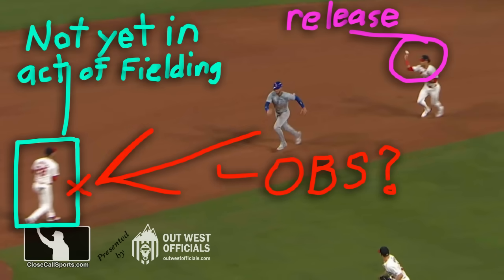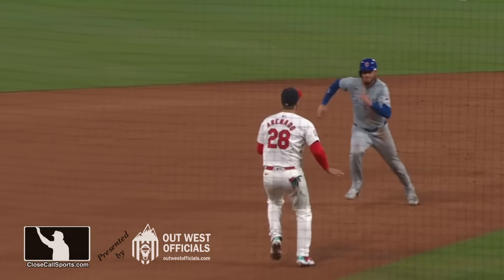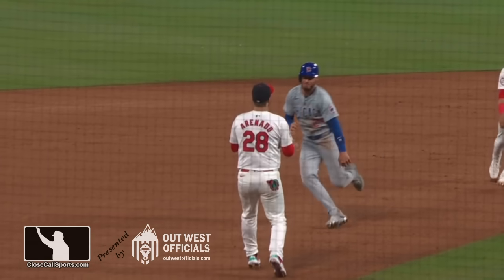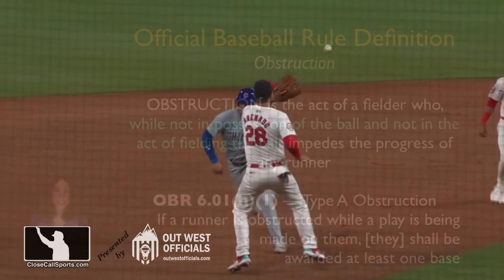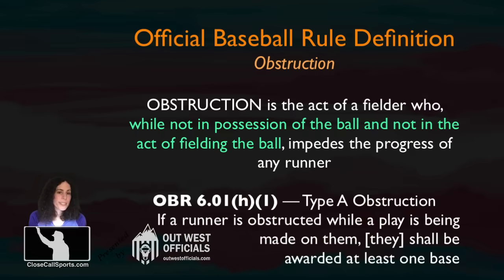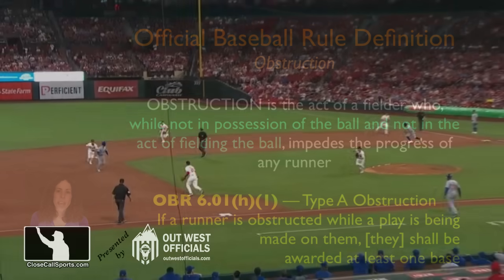His act of fielding, so to speak, occurs way too late — after he has already impeded Bellinger. So I have obstruction Type 1. You might disagree with me, but I thought this was obstruction. Obstruction Type 1: there's an act of play being made on the runner. The runner gets their next base, so Bellinger gets third, and the trailing runner gets whatever base they would have ended up at had the obstruction not occurred — that's called nullify the act.